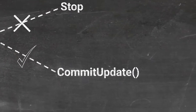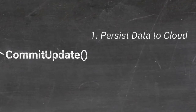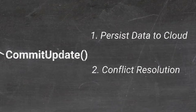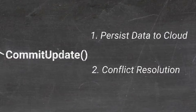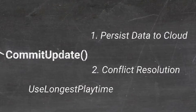OpenSave is going to have a callback method to ensure we were able to connect to the cloud. If successful, we'll put all our game data into a byte array and try to save it with a commit method. The commit method does two things: it persists data to the cloud and handles conflict resolution. Because we're saving to the cloud, users can connect from multiple devices, so we need to know which save is most up to date. We'll use a conflict resolution strategy called UseLongestPlayTime, which is the simplest to implement. There are multiple methods available, as well as the option to write your own manual method.